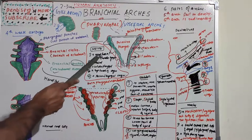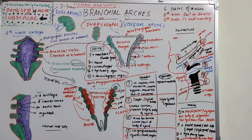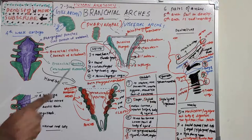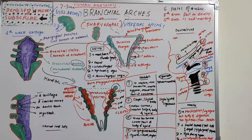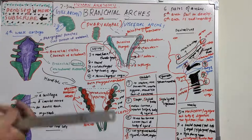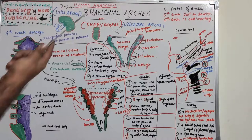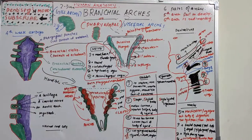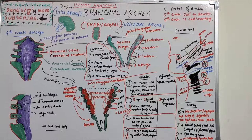The nerve supply of the first arch (mandibular arch) is the trigeminal nerve, with its maxillary and mandibular branches. The chorda tympani, a branch of the facial nerve, is also involved in supplying the first arch. The arterial supply of the first arch is the maxillary artery.